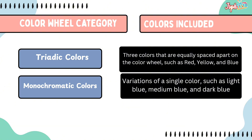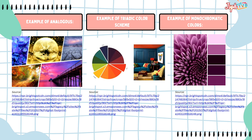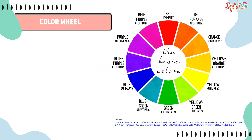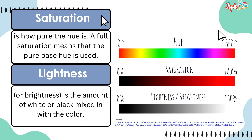Triadic colors are three colors that are equally spaced apart on the color wheel, such as red, yellow, and blue. Monochromatic colors are variations of a single color, such as light blue, medium blue, and dark blue. Examples of analogous, triadic, and monochromatic color schemes are shown. Saturation is how pure the hue is — full saturation means the pure base hue is used. Lightness, or brightness, is the amount of white or black added to the color.